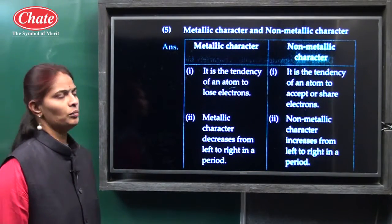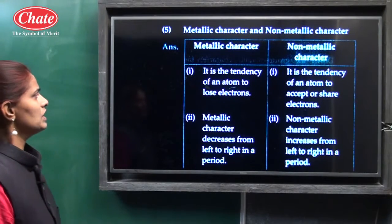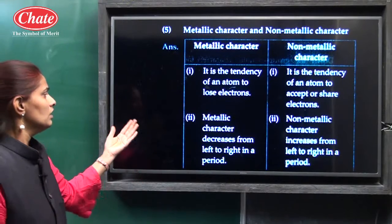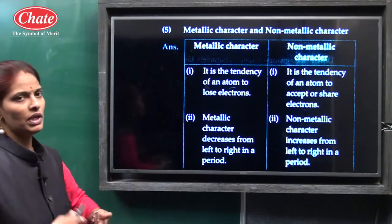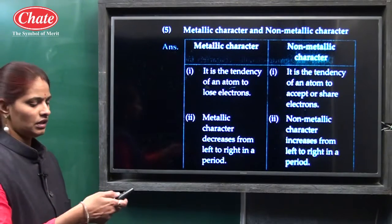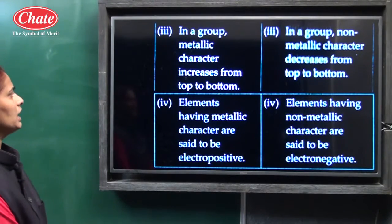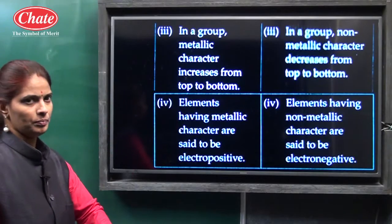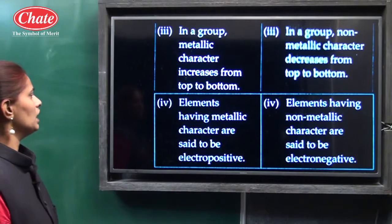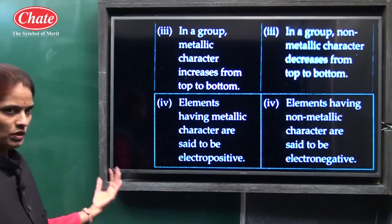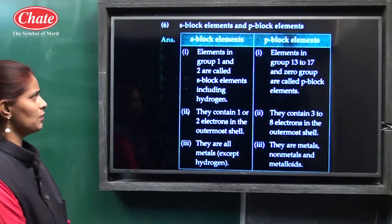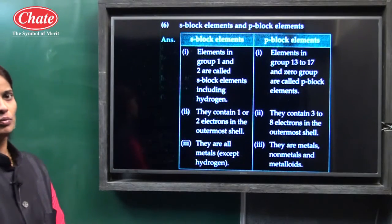Then the metallic character and non-metallic character. Metallic character is the tendency of an atom to lose electrons. Metallic character decreases from left to right in a period, and non-metallic character increases from left to right in a period. In a group, metallic character increases from top to bottom, and non-metallic character decreases from top to bottom. Elements having metallic character are said to be electropositive, and those with non-metallic character are electronegative.